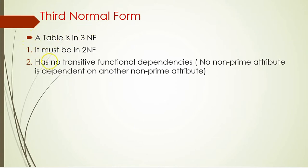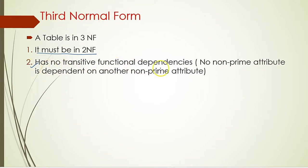A table is in the third normal form when it satisfies two conditions. First, it must be in second normal form — we already discussed about the second normal form. Second condition is it has no transitive functional dependency. So earlier, second normal form talks about no partial dependency; third normal form talks about no transitive functional dependency.